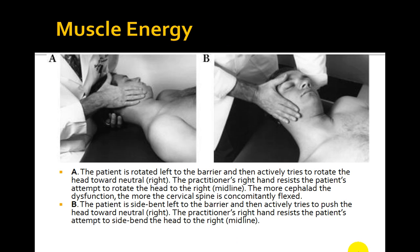Here is one example in the cervical spine. In section A, the patient is rotated to the left to the barrier and then actively tries to rotate the head towards the neutral side, which is the right. The practitioner's right hand resists the patient's attempt to rotate the head to the right. The more cephalad the dysfunction, the more the cervical spine is going to be flexed.